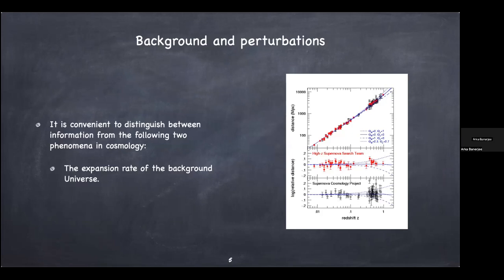It's useful to think about cosmology in terms of what's happening to the background universe and what's happening to perturbations on it. The expansion rate of the background universe is probed by looking at how distant galaxies are moving away from each other. Hubble in 1920 discovered the expansion of the universe, and the supernova measurements of the 2000s showed us that the universe as a whole is expanding at an accelerated rate.